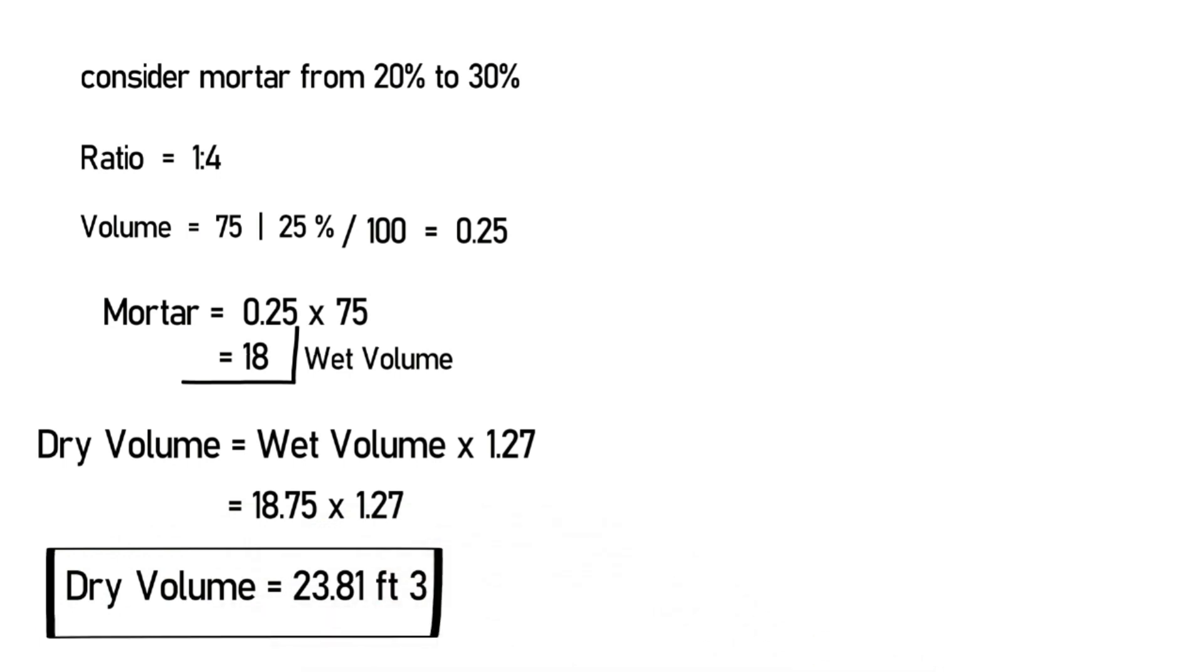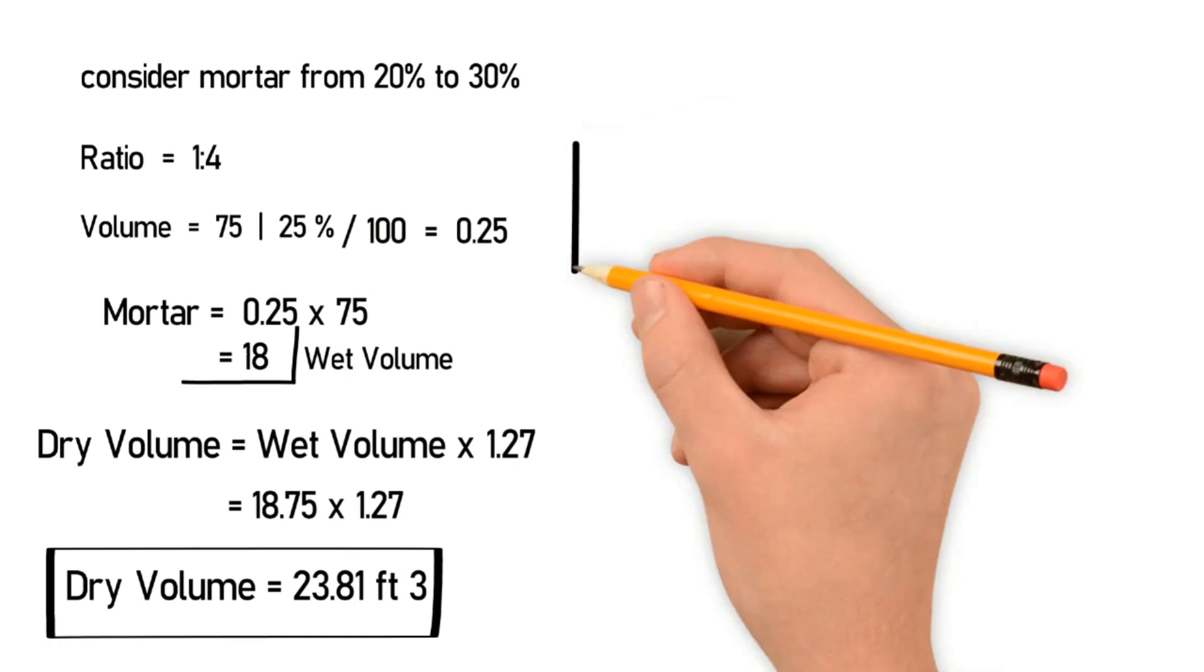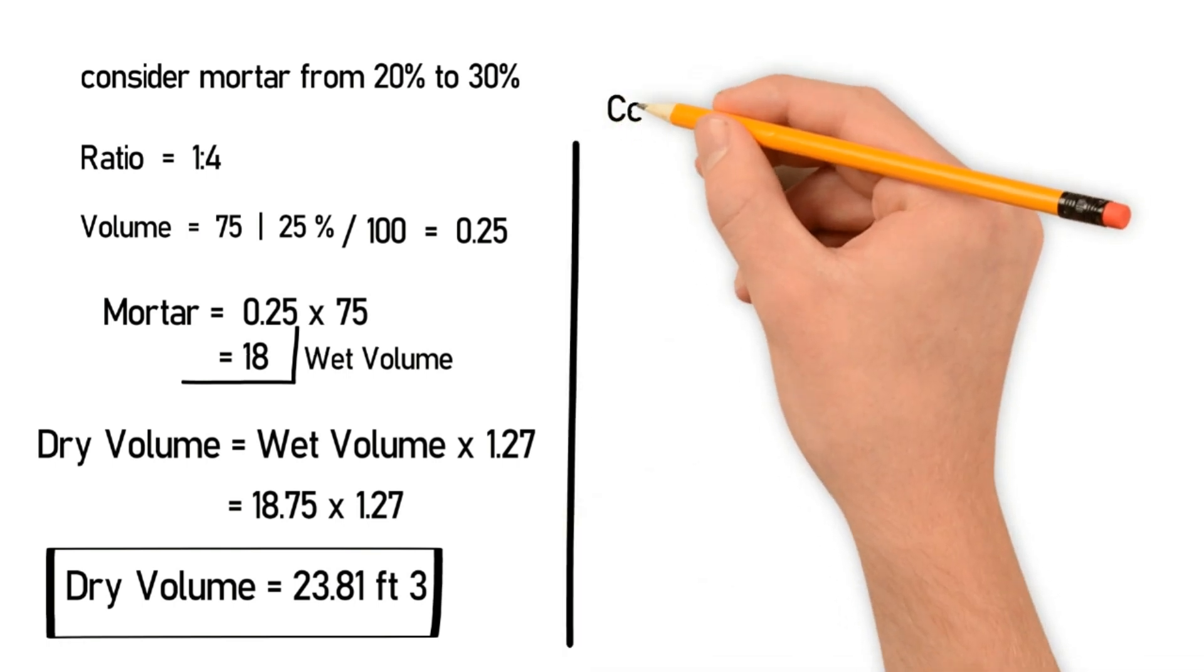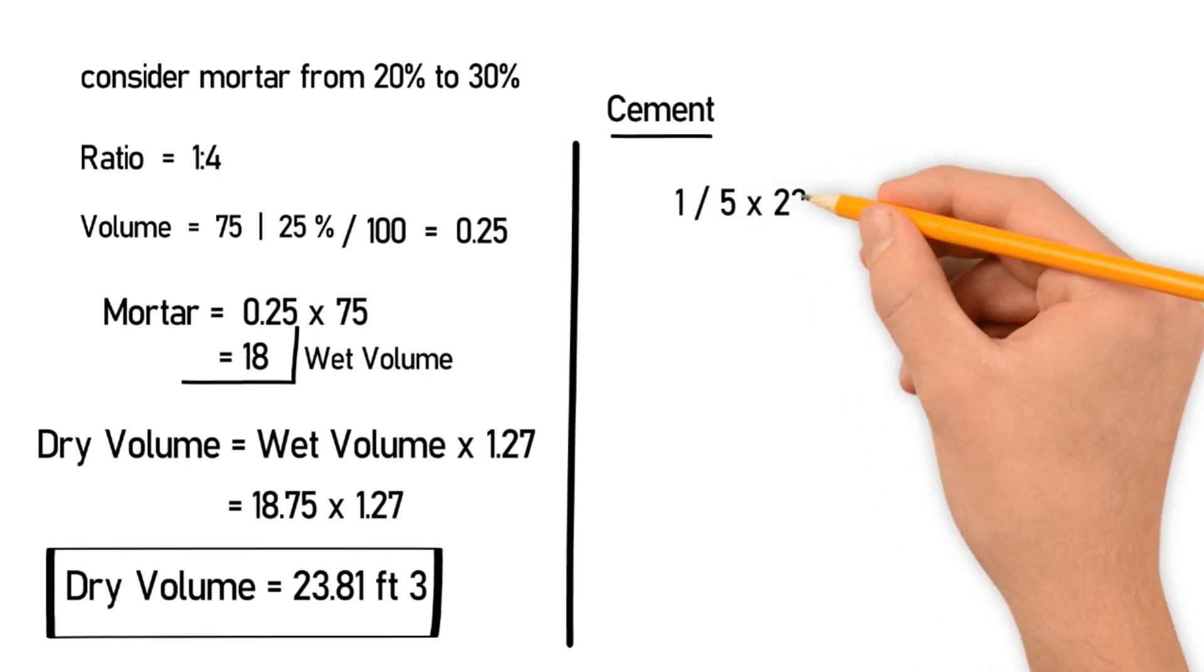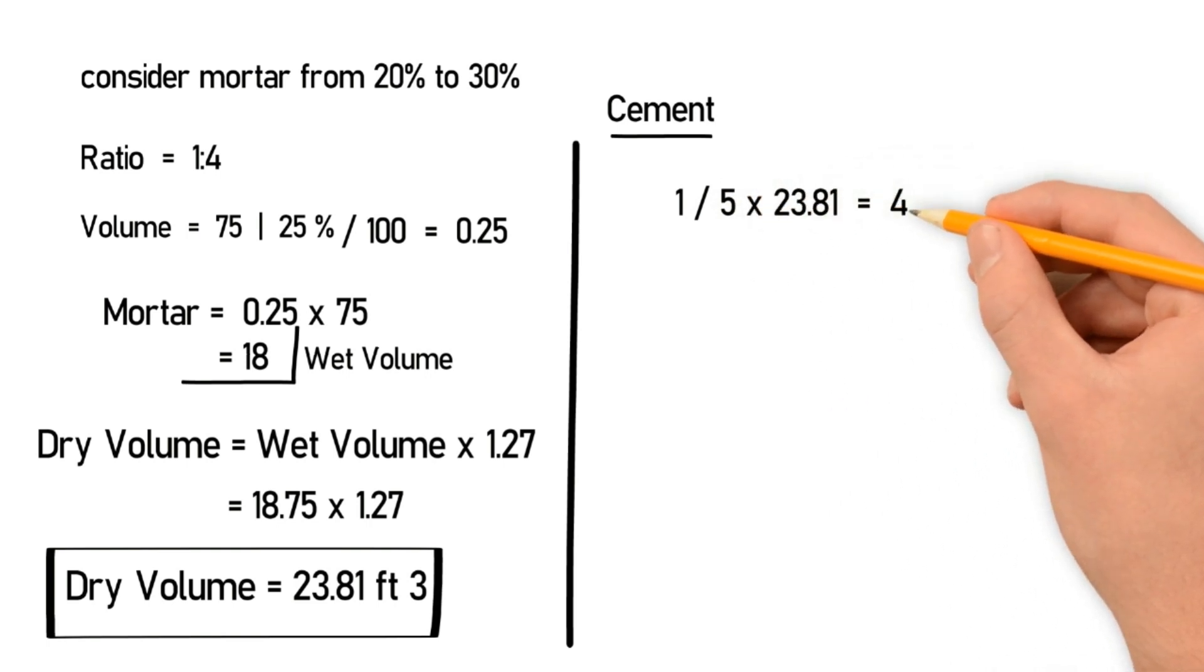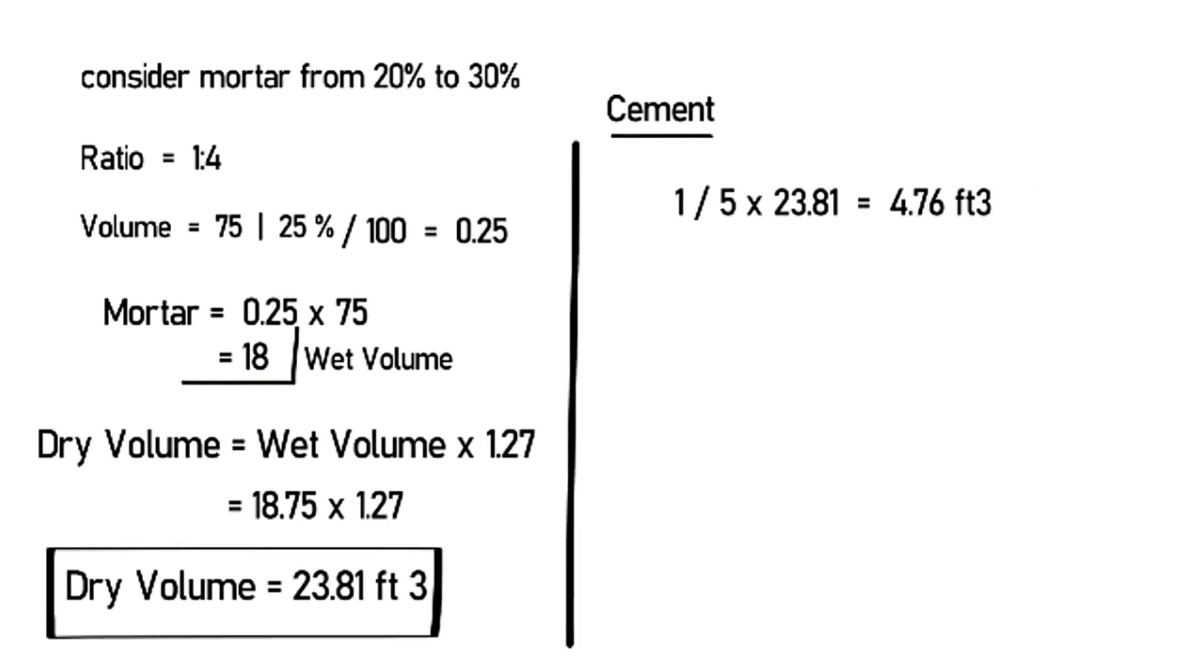Let's find the volume of the cement. In the ratio we took before, the 1 is cement and 4 is sand. Let's calculate the quantity of cement now, which will be 1 divided by 5 multiplied by 23.81, which is the dry volume of the mortar. So this will give you 4.76 cubic feet.